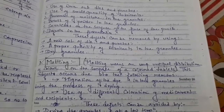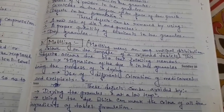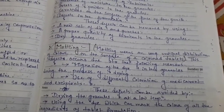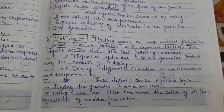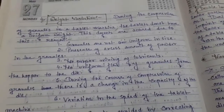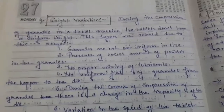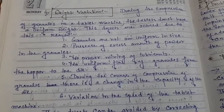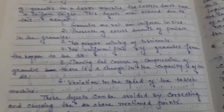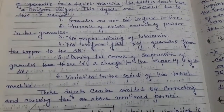Mottling means an unequal distribution of color — this is a color defect. When there is uneven distribution of color on the surface of the tablet, this is the mottling problem. Another problem is weight variation. During the compression of granules, the tablets do not have a uniform weight. Causes include granules that are not uniform in size, presence of excess powder in the granules, and improper mixing of the lubricants.